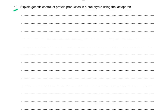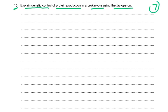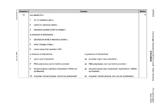Question 10: explain the genetic role of protein production in a prokaryote using the lac operon — the only long question in this paper, worth seven marks. There is no negative marking, so write a comprehensive answer. The mark scheme references a regulatory gene: in glucose the bacteria do not make the enzyme needed for lactose, but in lactose the regulatory gene codes for a repressor protein that binds to the operator.